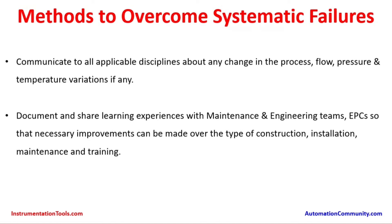Any changes in process conditions must be reviewed with maintenance and engineering teams to ensure safe operation. Learning experiences should be documented and shared with maintenance, engineering, and EPC (Engineering, Procurement, and Construction) companies so that improvements can be made in construction, installation, maintenance, and training. Any failures in the plant must be communicated back to manufacturers about the nature of the failures so that better designs can be produced for future products. This is a combined responsibility of plant operations and production teams.